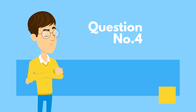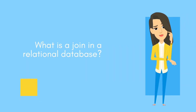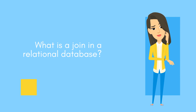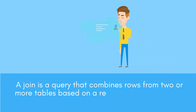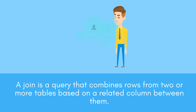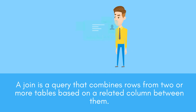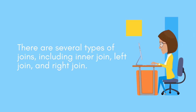Question number four: What is a join in a relational database? A join is a query that combines rows from two or more tables based on a related column between them. There are several types of joins, including inner join, left join, and right join.